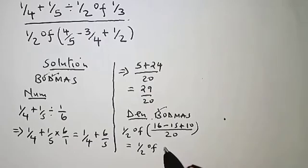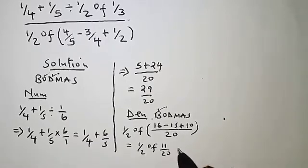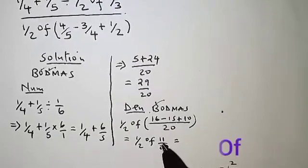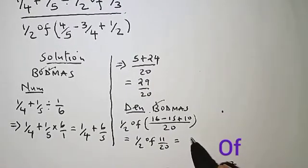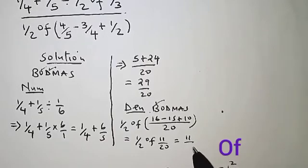This should be 11 over 20, which finally, 'of' means multiplication, so one half of 11 over 20, that is 11 over 40.